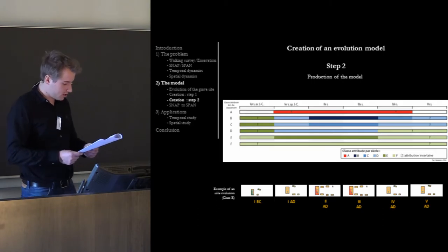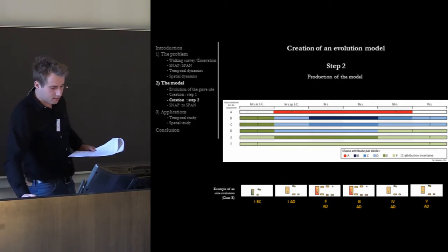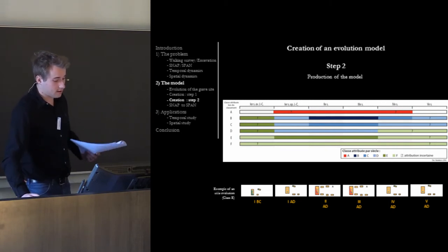This is a model for each class. For example, a villa in the 2nd and 1st century AD is in the 1st century AD a little villa, and in the 1st century BC is just a farm.